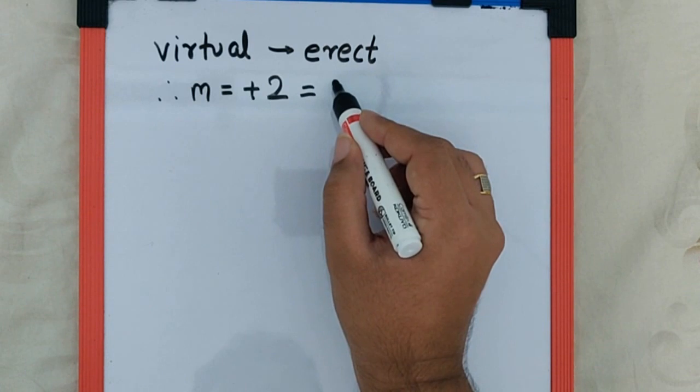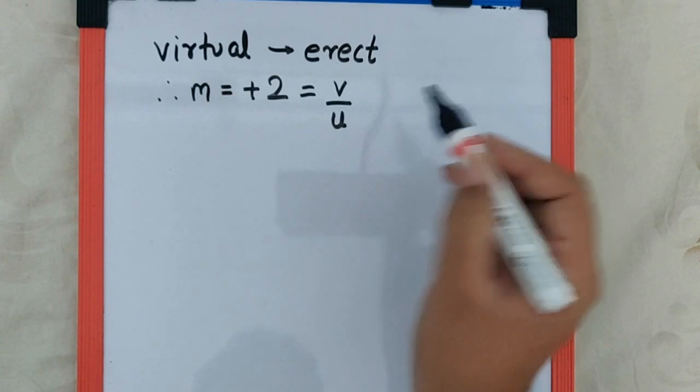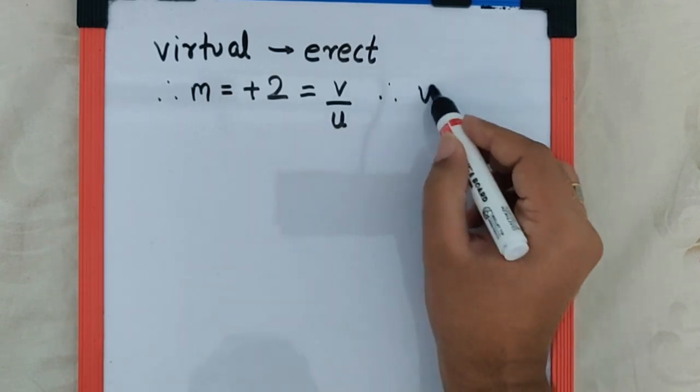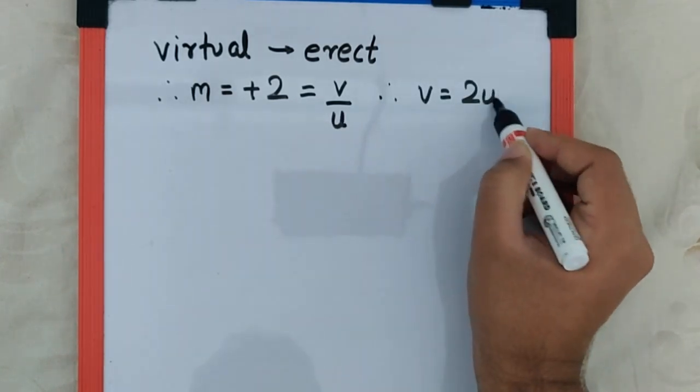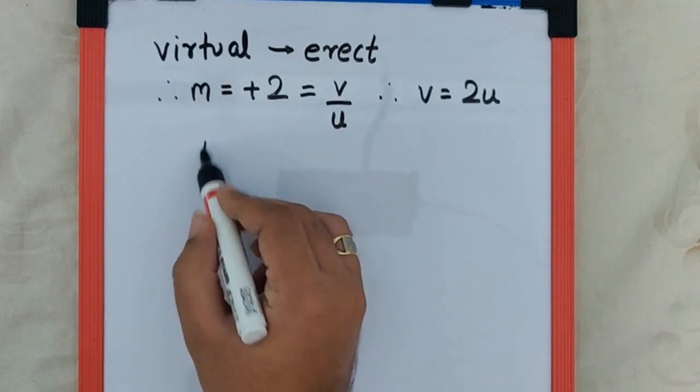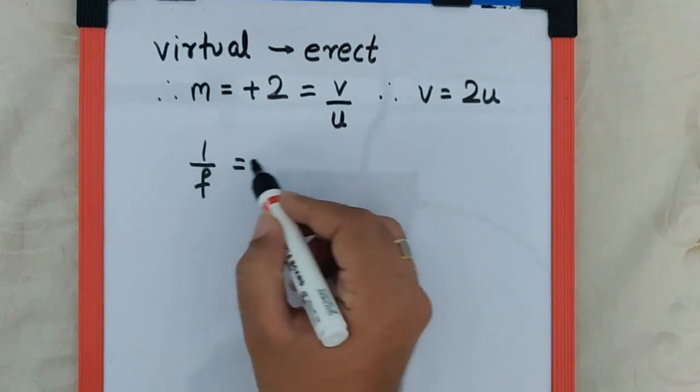...magnification is height of image upon height of object, which is distance of image upon distance of object. And that we can say v is equal to 2u. Now by lens maker equation we have 1 by f is equal to 1 by v minus 1 by u.